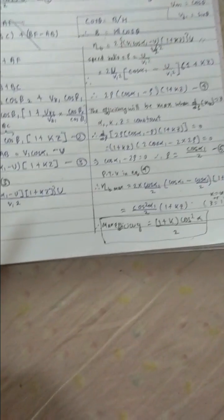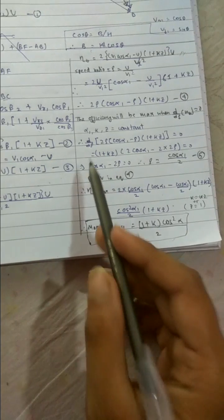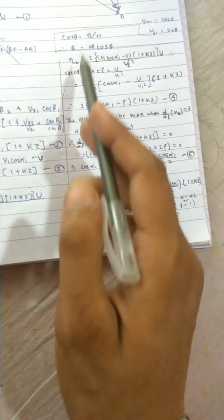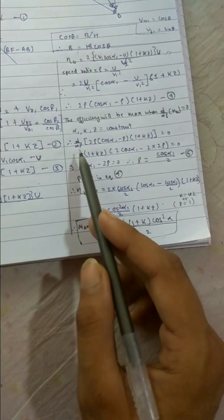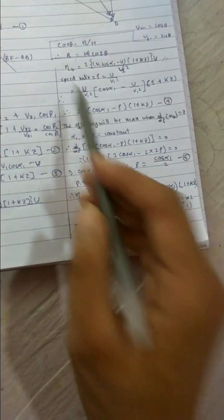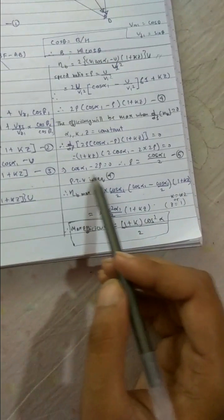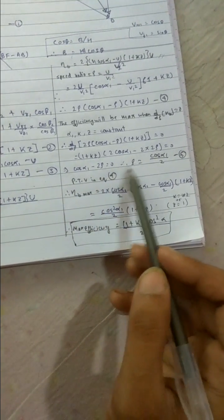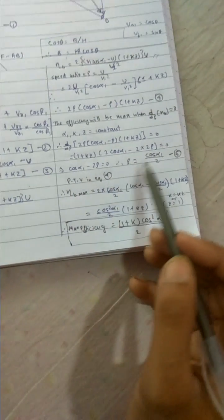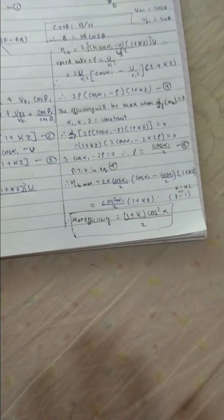So if we differentiate it, we get the condition for the maximum efficiency. So d by d rho of efficiency, so d by d rho of eta b. When we do eta b, putting this value here, d by d rho of this expression, we will get cos alpha 1 minus 2 rho equals to 0. Keeping rho here, rho equals to cos alpha 1 by 2. Now we got the value of rho.